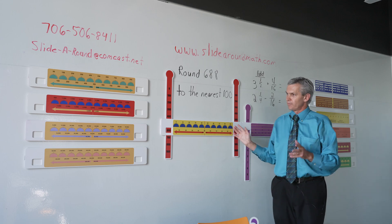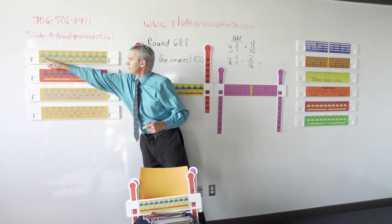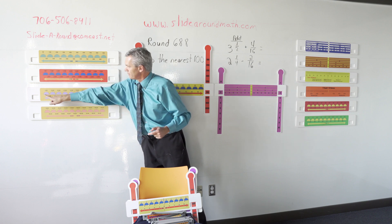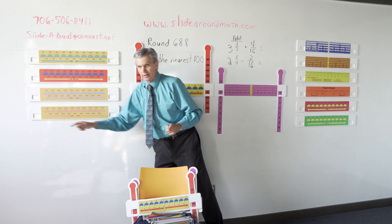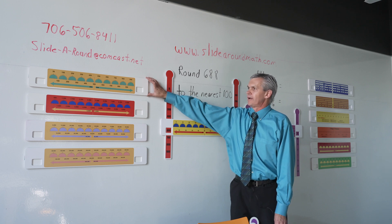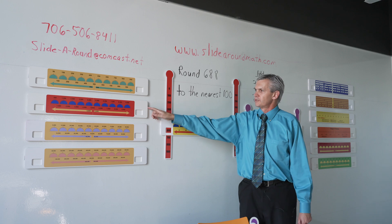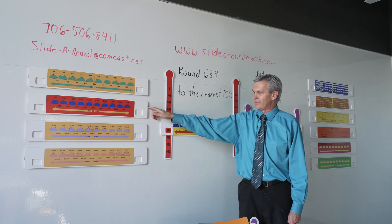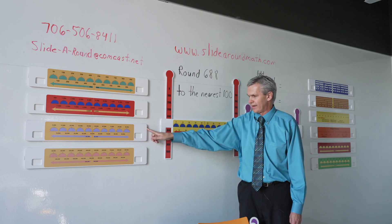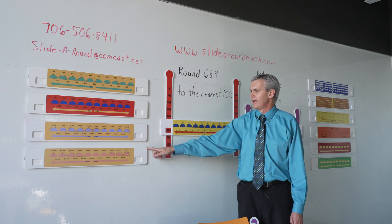On my number line to 10 million, each line here is worth 1. On this one over here each line is worth 10, 100, 1,000, and 10,000. This manipulative can round to the nearest hundred and nearest thousand. This one can round to the nearest thousand and 10,000. This can round to the nearest 10,000 and 100,000. And this can round to the nearest hundred thousand and million.